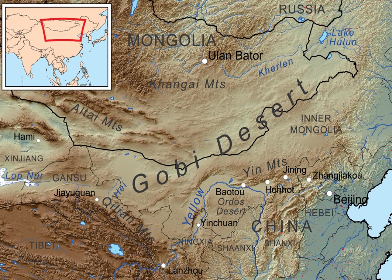The most recent project is called the Three North Shelter Forest Program. Huge strips of newly planted forests — the government hopes the forests will help stabilize the soil, retain moisture, and act as a buffer against further desertification.